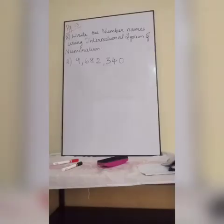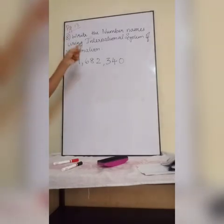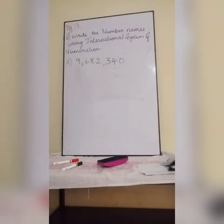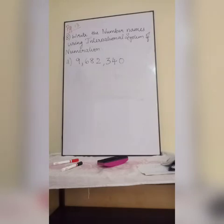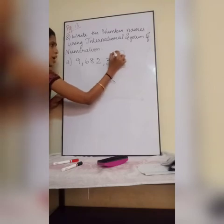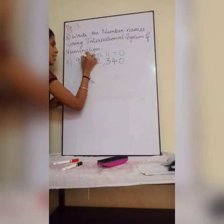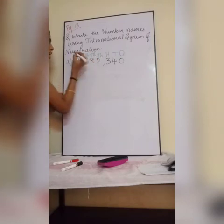Next is your 8th question: write the number names using the international system of numeration. Till now we were dealing with the Indian system of numeration. Now we are going to deal with the international system of numeration. We have to write the number names for this numeral. Before writing the number name, you will write the place value for this number: 1, 10, 100, 1000, 10,000, 100,000, 1,000,000, 10,000,000, 100,000,000, 1,000,000,000.